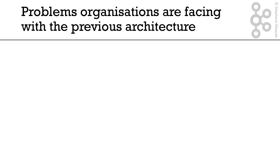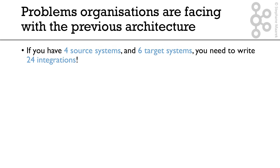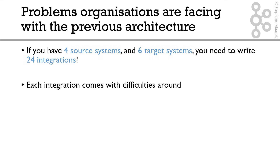So the problem is that with the previous architecture, if we have four source systems and six target systems, do the math — you need to have 24 integrations to write. And each integration, as you may or may not know, comes with a lot of difficulties.